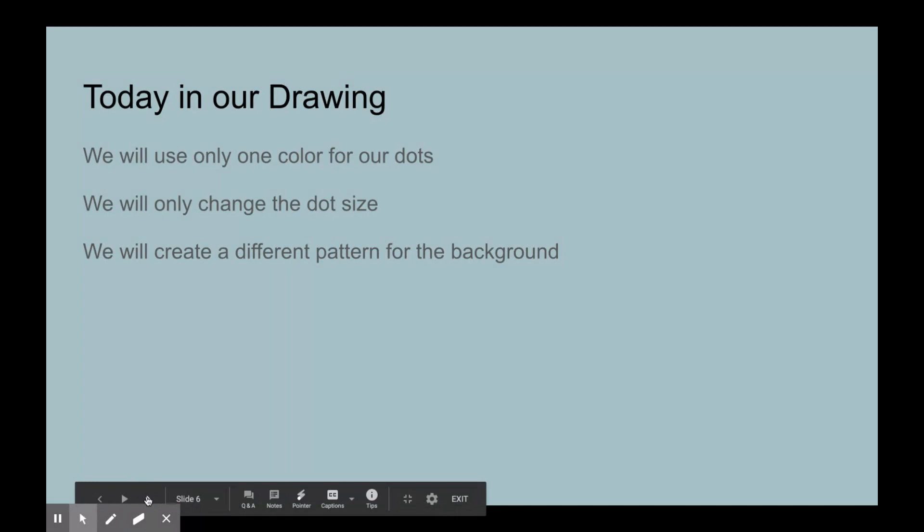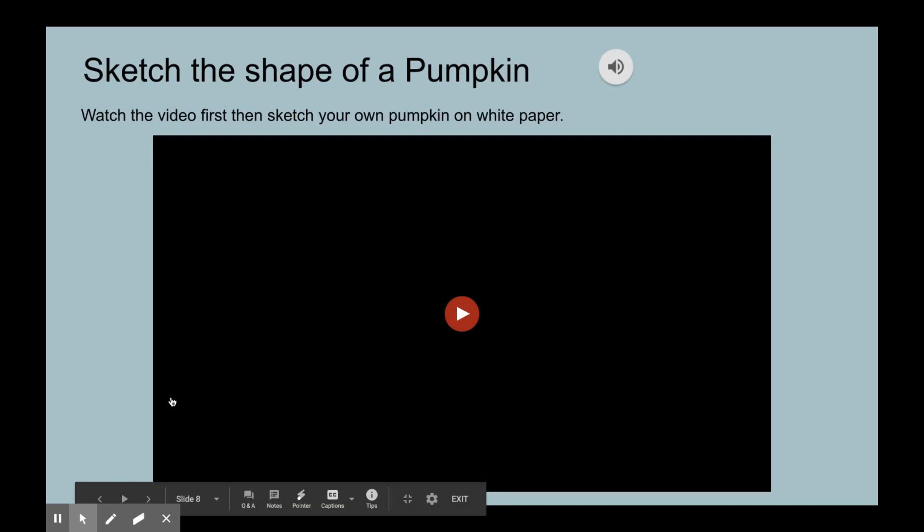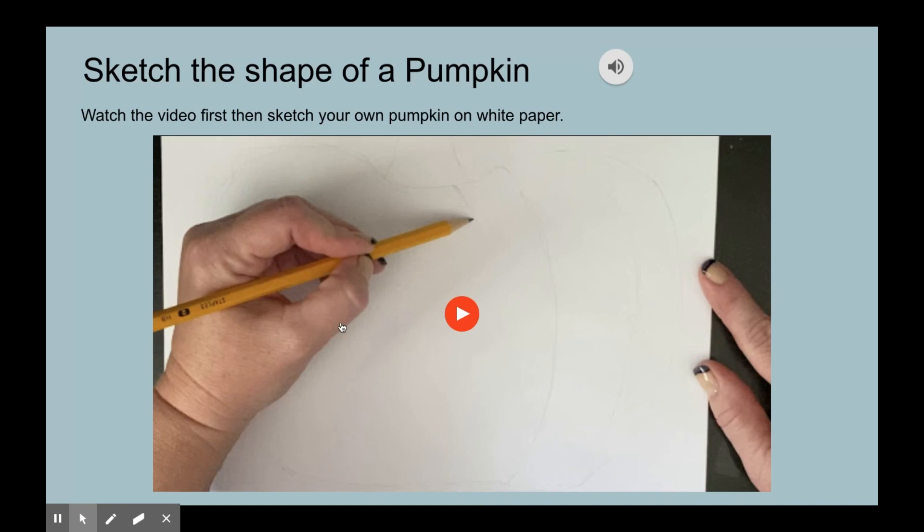We will use only one color for our dots. We're going to use black for the body of the pumpkin, and for the stem you can use white. We will only change the dot size - big, medium, little, tiny, however many sizes you want. Then we will create a different pattern for the background. The materials you need today are a pencil, a piece of white paper, some crayons, and some markers.